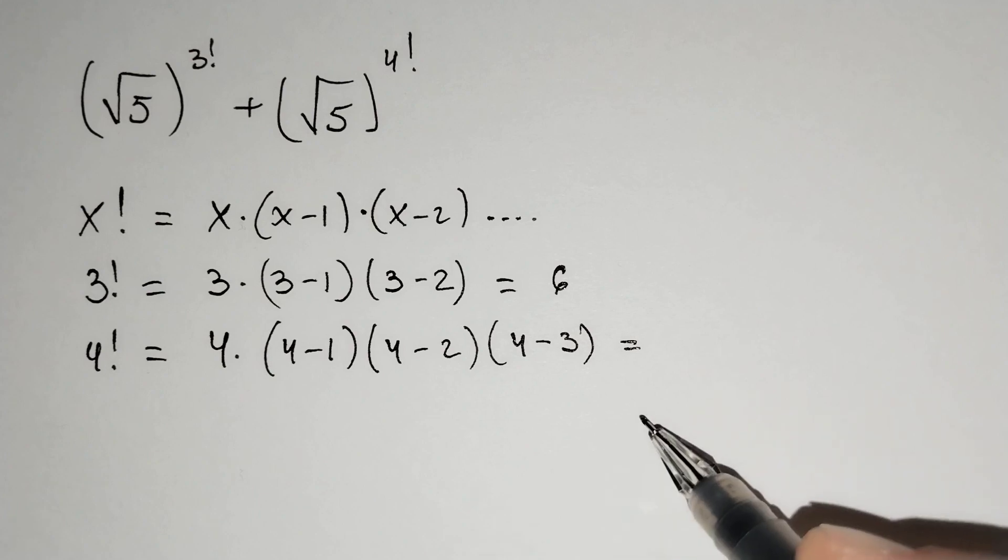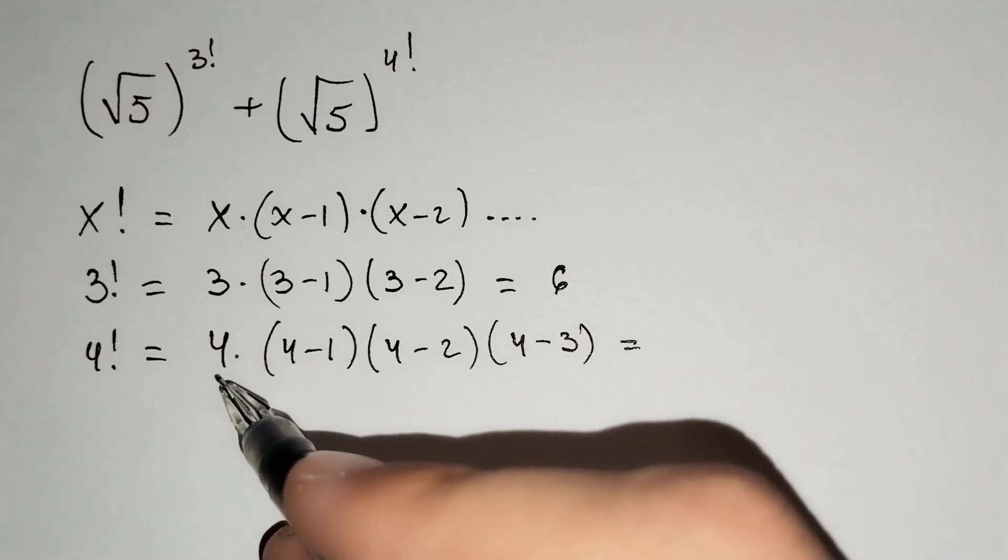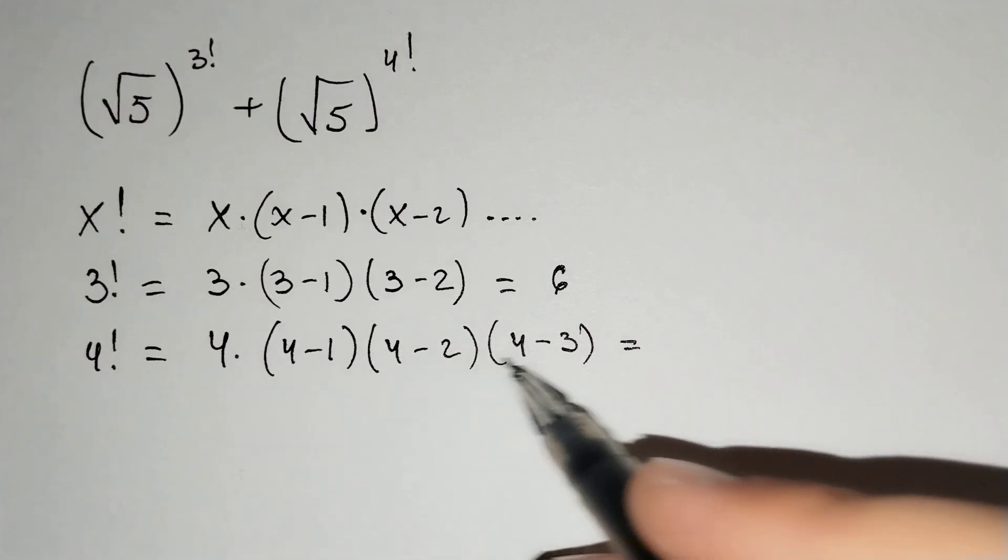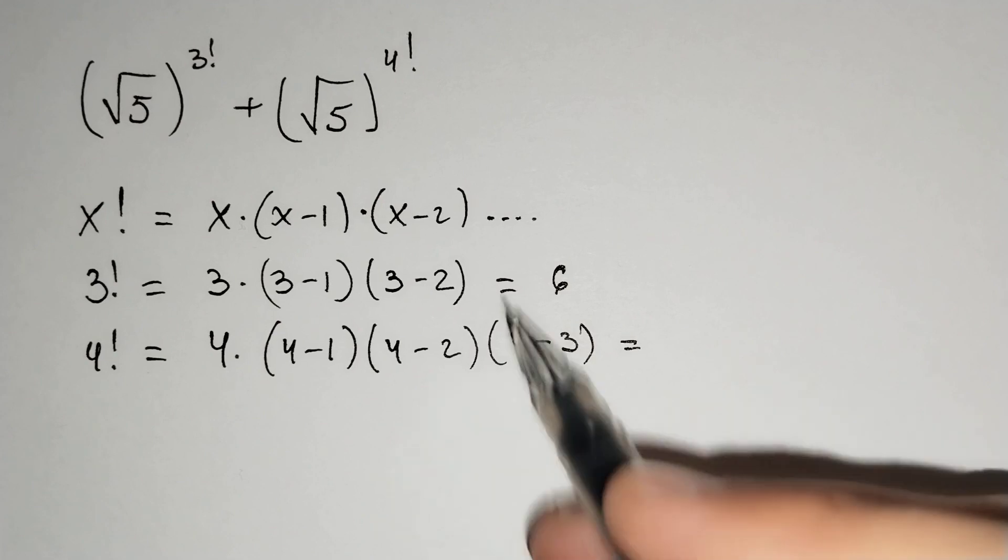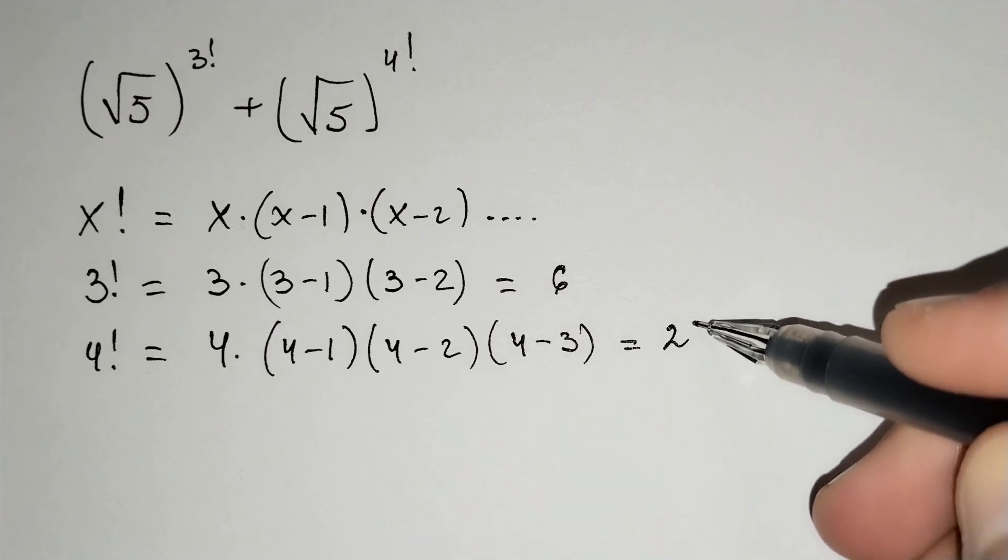And 4 factorial equals to 4 times 3 times 2 times 1, and this is equal to 24.